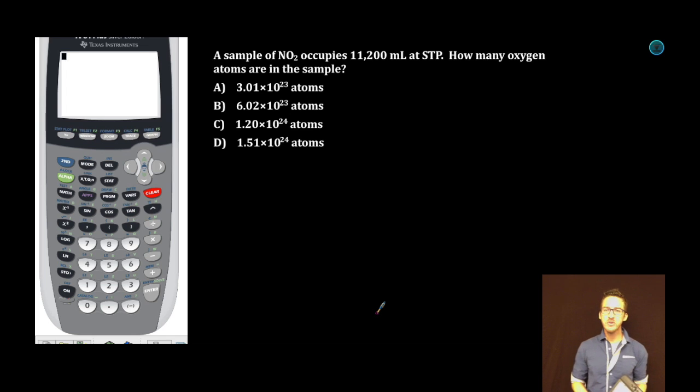What's up people? Let's do some more multiple choice. Sans la calculadora, using our brains. A sample of NO2 occupies 11,200 milliliters at STP. How many oxygen atoms are in the sample?